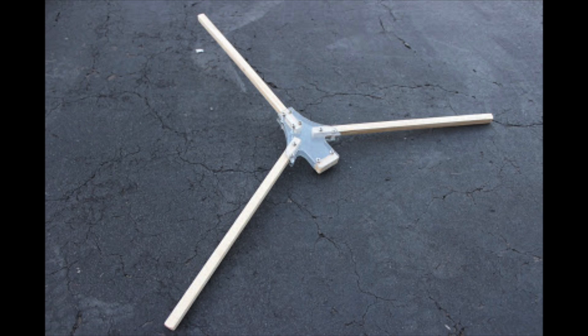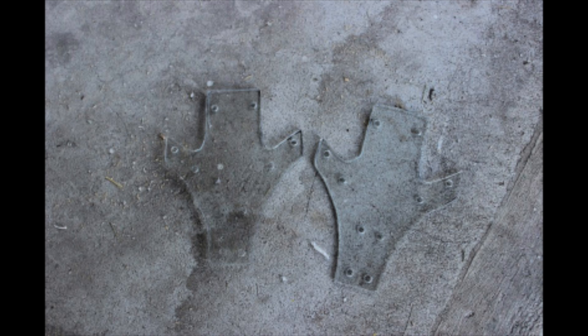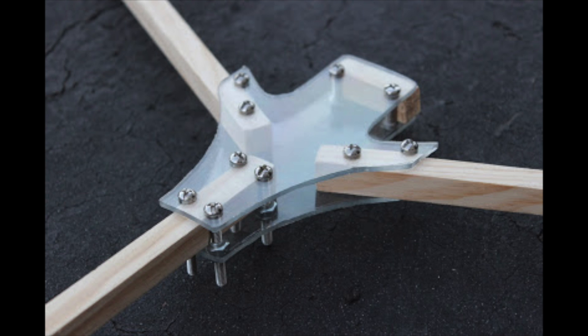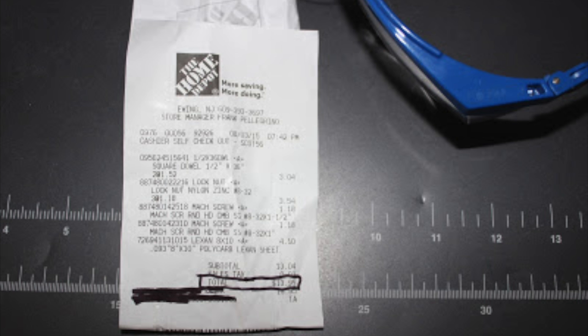So the main materials that were used for the tricopter were some basic pine wood, some polycarbonate for the inner frame, and some standard screws just to screw it all together. And really, you can buy all this stuff from Home Depot, Lowe's, any local hardware store should have all this stuff.